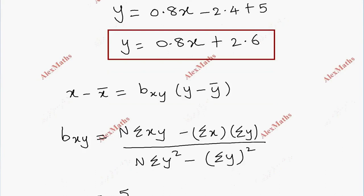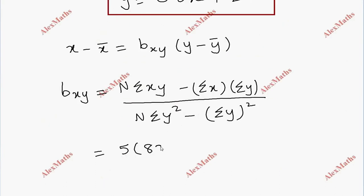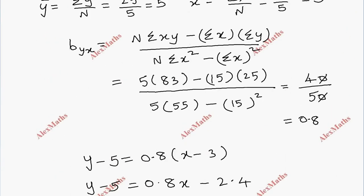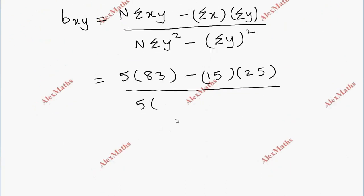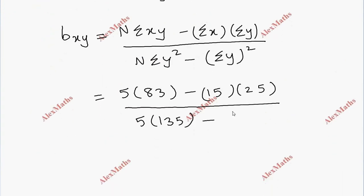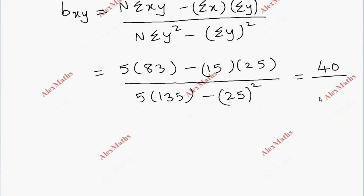Substituting: n equals 5, sigma XY equals 83, so numerator is 5 into 83 minus 15 into 25, which gives 40. The denominator is 5 into sigma Y square, which is 135, minus sigma Y whole square, which is 25 squared equals 625. After simplification the denominator is 50, so b_xy equals 40 divided by 50 equals 0.8.